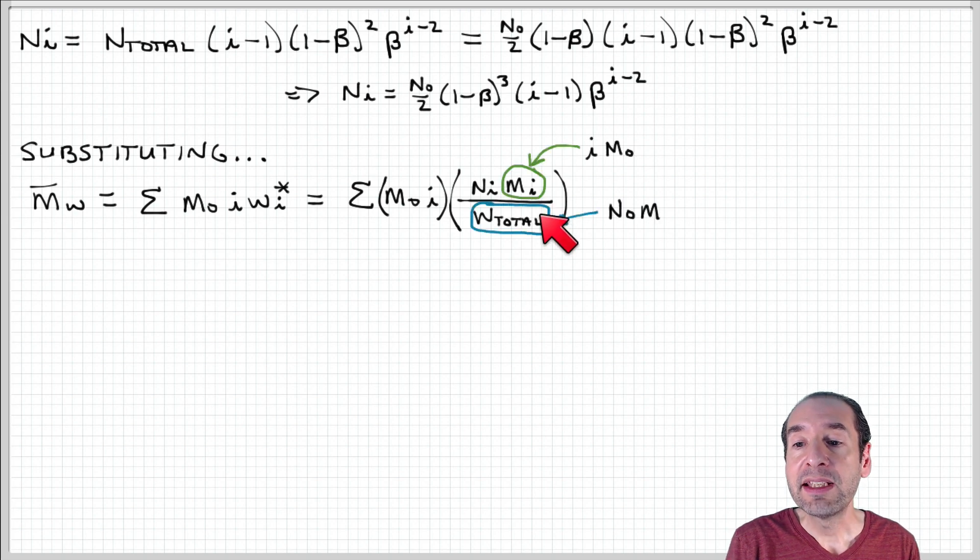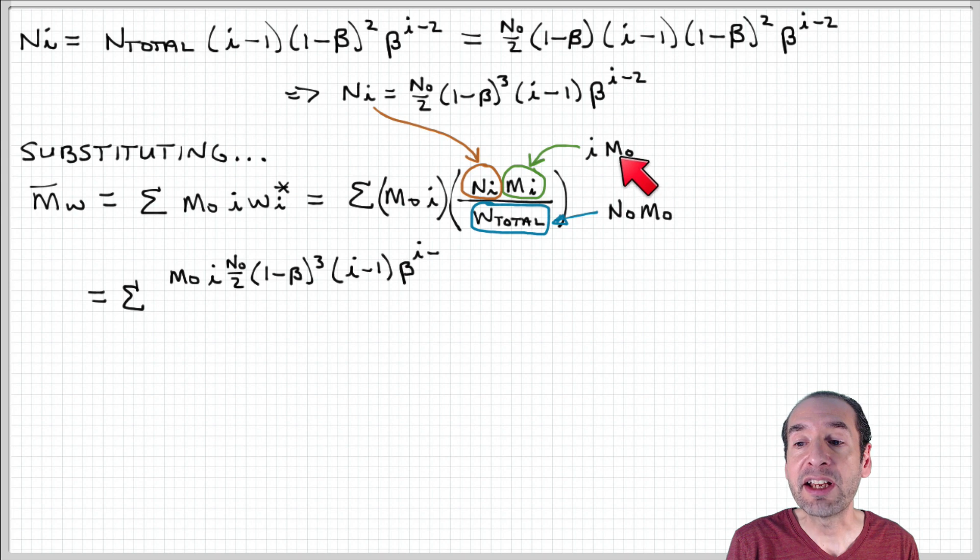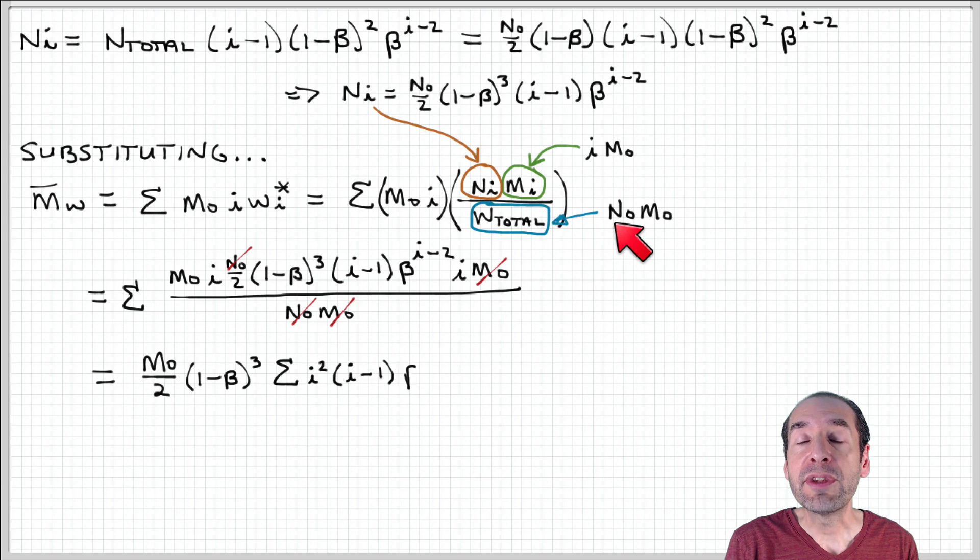Remember that Mi, the molecular weight of a chain of length i, is equal to i times the monomolecular weight. We said that the total weight is equal to the total number of polymerized monomers times the monomolecular weight, and Ni we calculated up here. So with this substitution, N naught cancels, terms combine, and we end up with an expression for the weight average molecular weight as M naught over 2 times 1 minus beta cubed times the summation of i squared times i minus 1 times beta to the i minus 2.